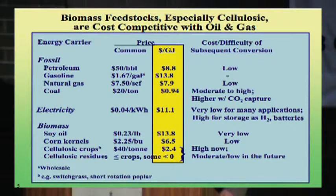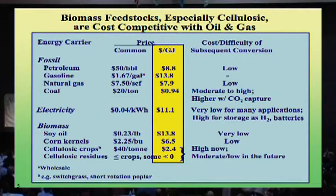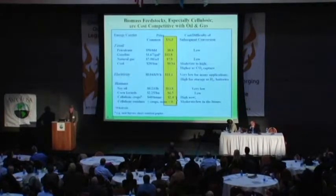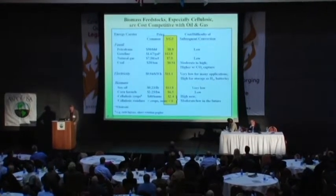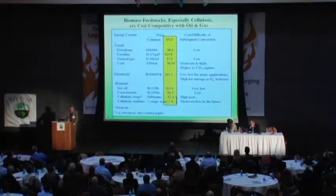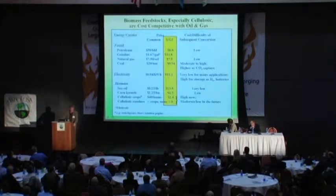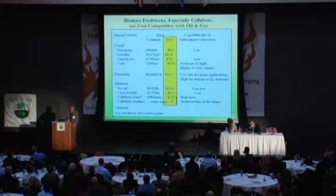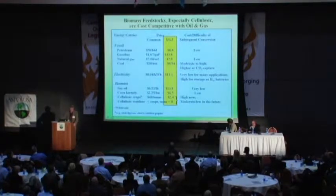Electricity is a rather dear place to begin a mobility chain at $11 per gigajoule. Soy oil, which I'm not a particular fan of, is one of the highest priced on here. Corn kernels are cheaper than oil, and cellulosic biomass is very inexpensive. In fact, in terms of cost per BTU, the purchase cost of cellulosic biomass is equivalent to oil at about $14 a barrel.